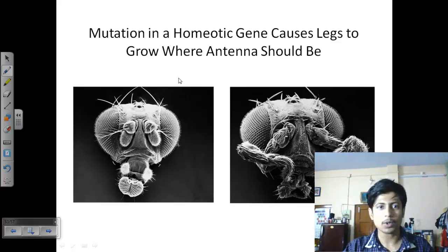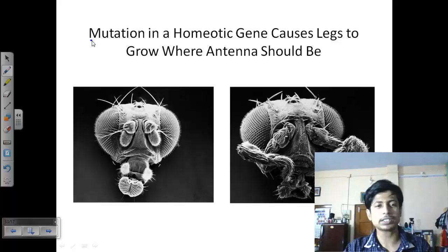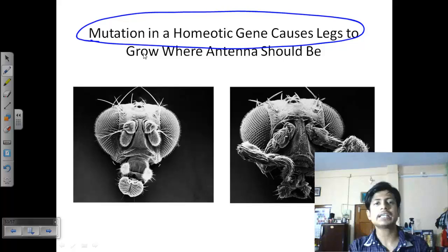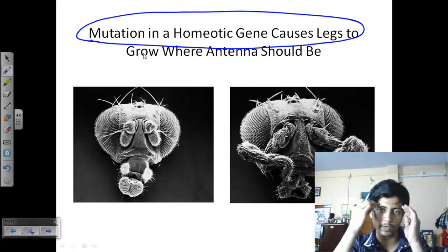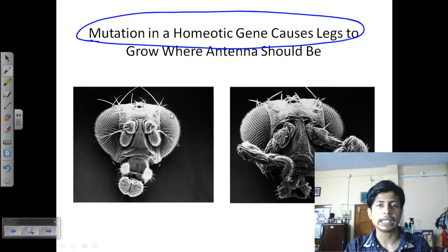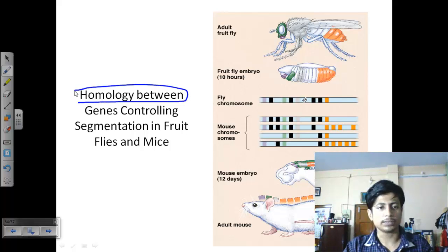Mutations in homeotic genes cause serious problems. In some cases, legs can grow out of the head due to homeotic mutations. Though genes are defined and determined about their function, if they are placed in the wrong regions through mutation, they produce a different function. In the head region, homeotic genes should properly develop the antenna, but due to mutation, legs can be generated instead of antenna.